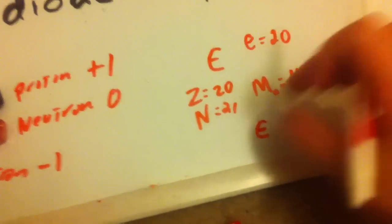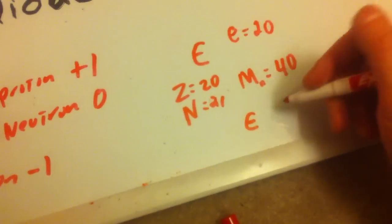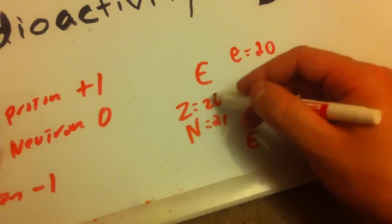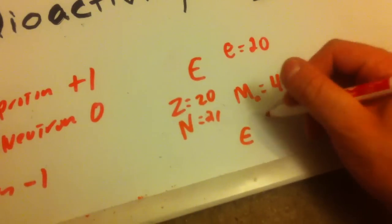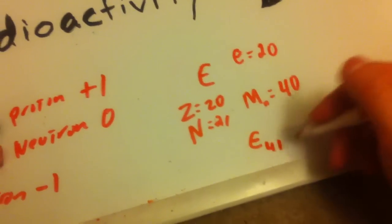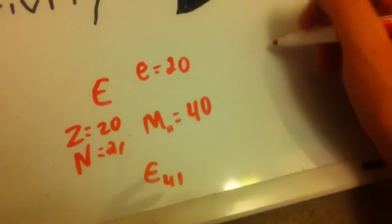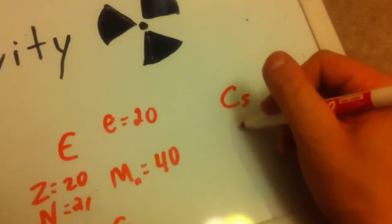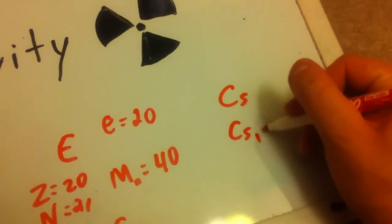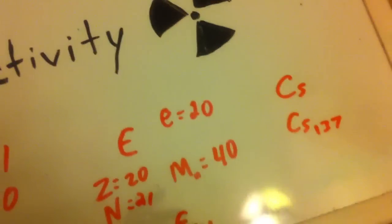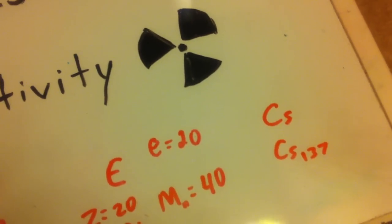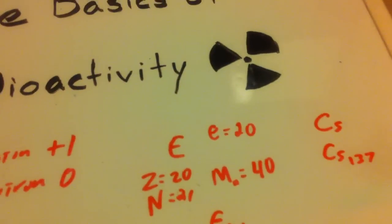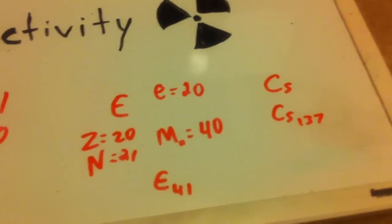Now, because it's not just the standard element E anymore, it would be categorized by number to distinguish it. What you would do is write down the mass number: 20 protons plus 21 neutrons equals 41 — so you'd write E-41. To give you a better example, cesium is a very common element. Cesium-137 is a radioactive version of cesium.